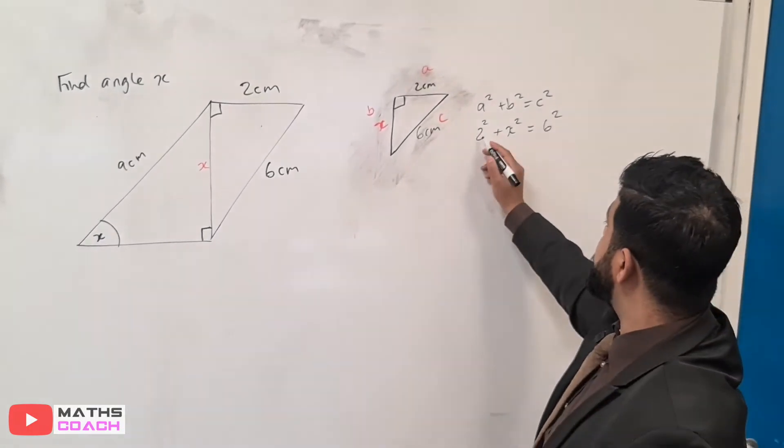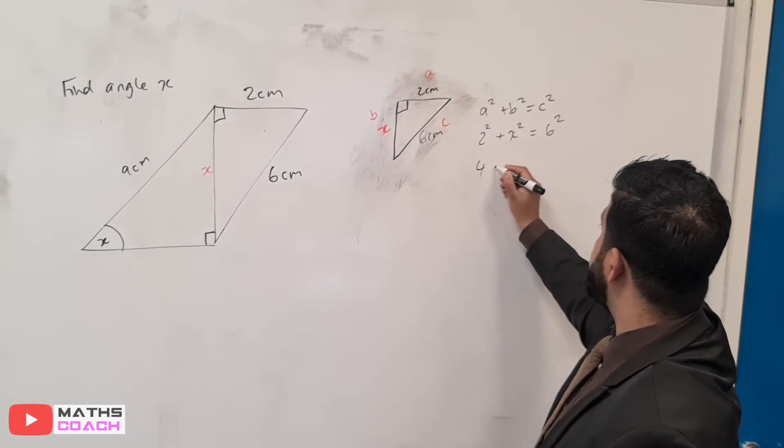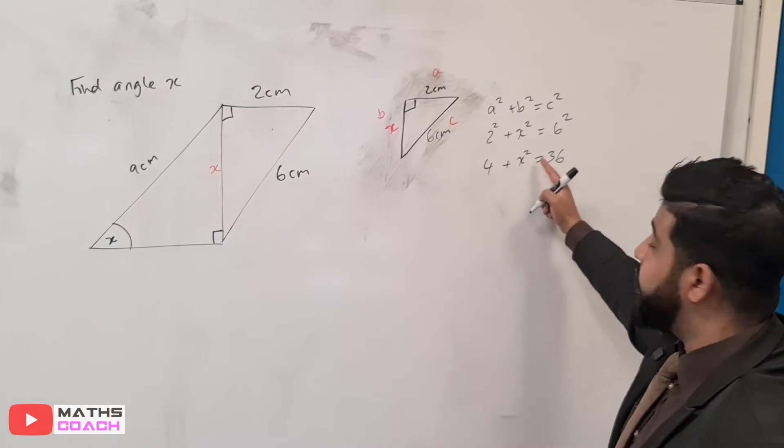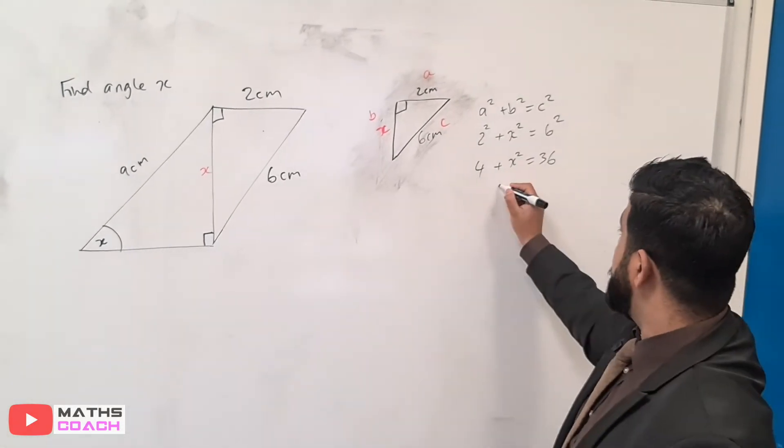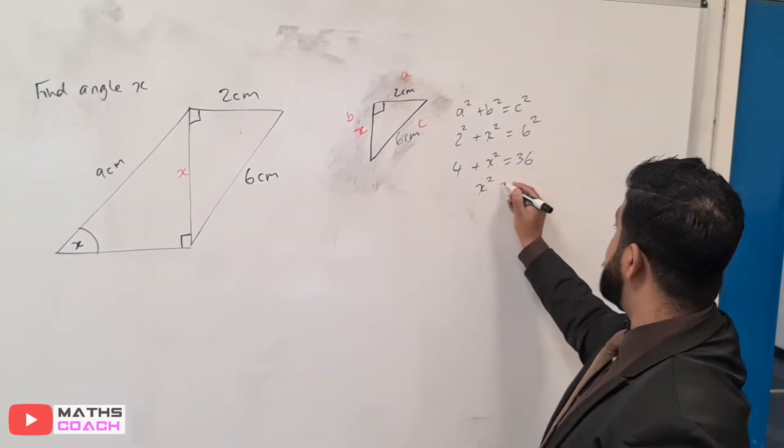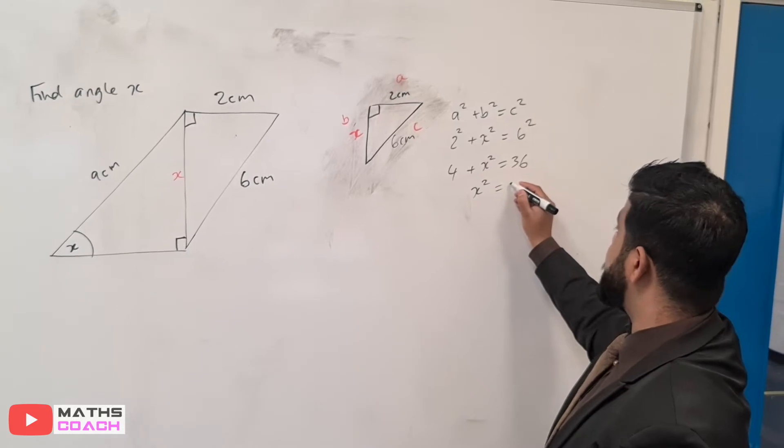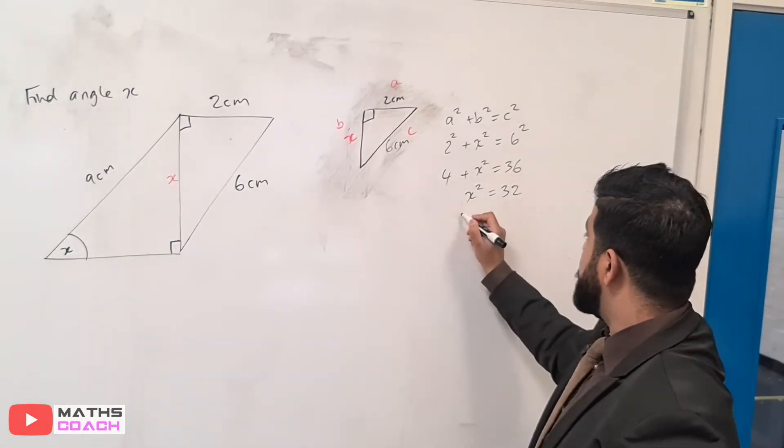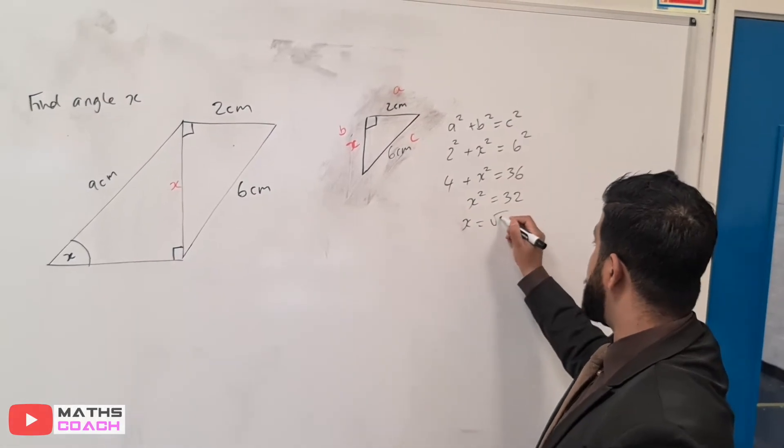Next, we calculate this. We get four plus X squared equals 36. We want to have X squared on its own, so we will take the four to the other side by subtracting. Therefore, 36 take away four is 32. Now, to find X, we will square root our answer of 32.